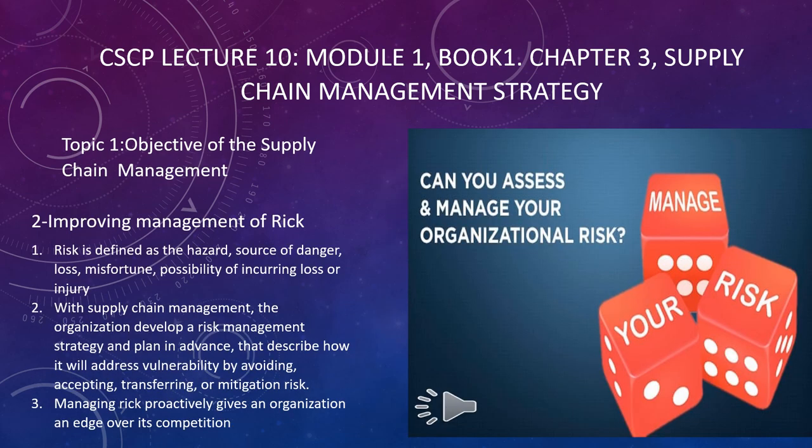The second objective is improving management of risk. Risk is defined as hazard, source of danger, loss, misfortune, or possibility of incurring loss or injury. With supply chain management, the organization develops a risk management strategy and plan in advance that describes how it will address vulnerability by avoiding, accepting, transferring, or mitigating risk. Managing risk proactively gives an organization an edge over its competition.